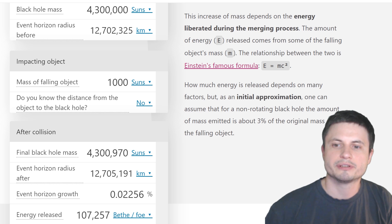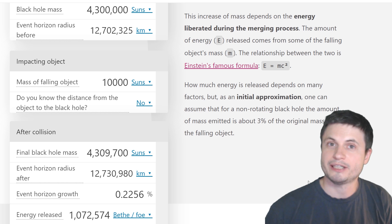If this object is about thousand suns in mass, it will already generate 107,000 foe, which is about one tenth to where we need to be. So here, an object that's about 10,000 suns will generate nearly enough energy to potentially cause some kind of an extinction event.